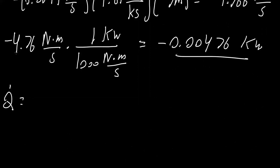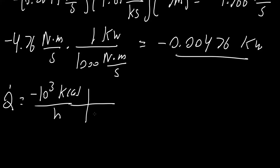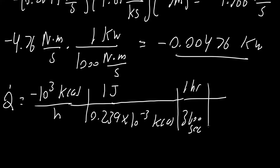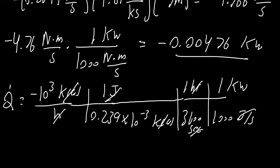In our problem, Q is equal to negative 10 to the 3rd kilocalories per hour. We know that 0.239 times 10 to the negative 3 kilocalories equals 1 joule. We need to ultimately convert this into kilowatts. We know that 1 hour is 3,600 seconds, and 1,000 joules per second is 1 kilowatt. Kilocalories cancel, hours cancel, leaving joules per second, and joules per second cancel with kilowatts. So this equals negative 1.16 kilowatts.